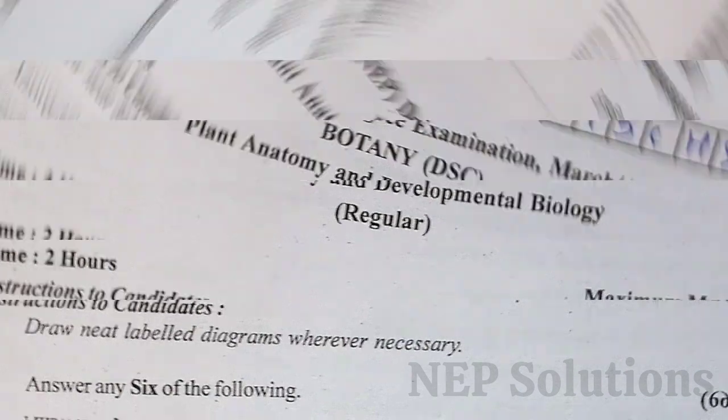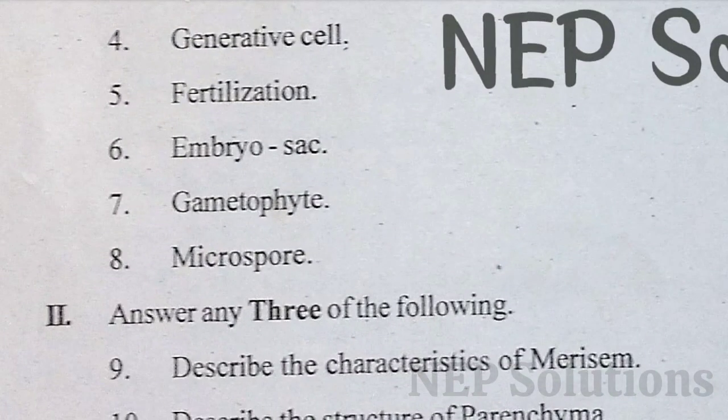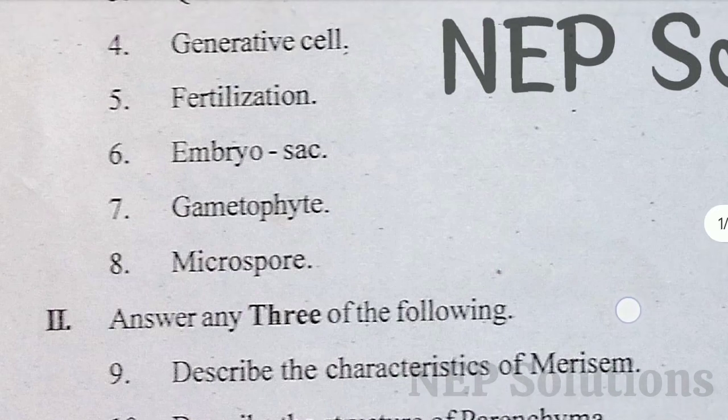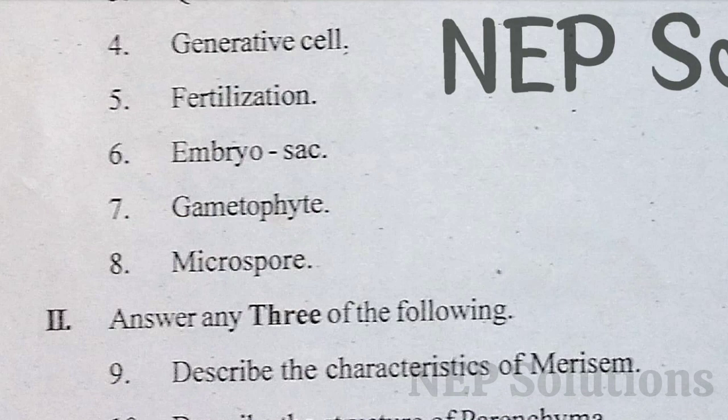The first question is: describe the characteristics of meristem. Meristem is the undifferentiated plant tissue composed of actively dividing cells, and it helps in the growth and development of the plant.